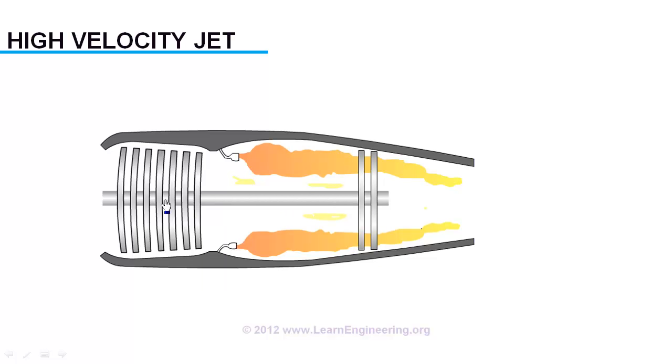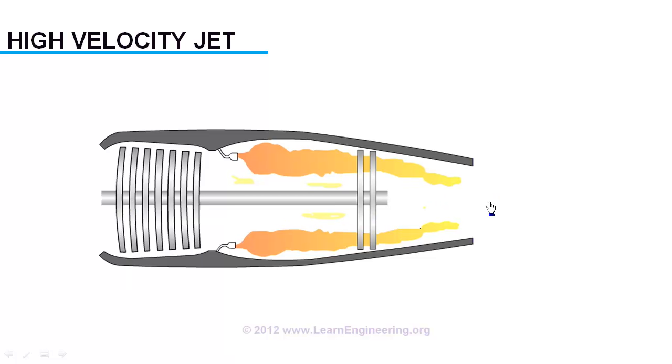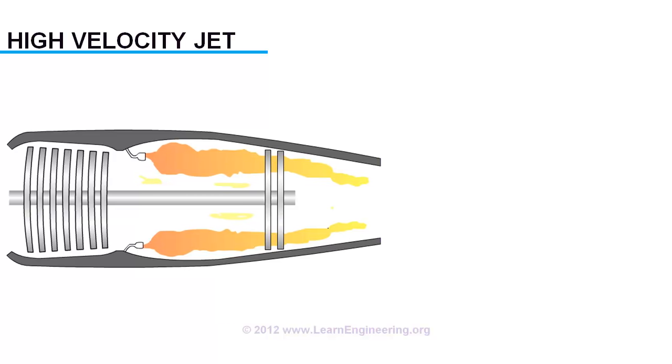Thus, the process of producing high velocity jet at the outlet has become self-sustainable. We will get continuous supply of high velocity jet and thrust force to this aircraft, thanks to synchronized working of all these components.